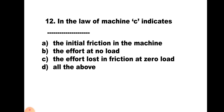Question number 12: In the law of machine, C indicates — A) the initial friction in the machine, B) the effort at no load, C) the effort lost in friction at zero load, D) all the above. C represents the initial friction, the effort required to lift no load, and the effort lost in friction at zero load. Therefore the correct answer is D) all the above.